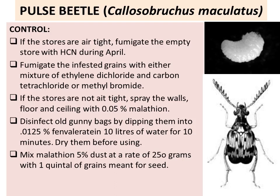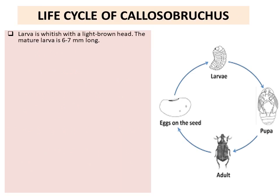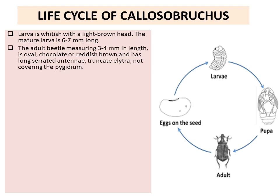Regarding the life cycle of Callosobruchus: adult males and females are separate. They mate and lay eggs on the surface of the seed. The eggs hatch to form the larva, which bores inside the seed. The larva is whitish with a light brown head. The mature larva is 6–7 mm long. The adult beetle is 3–4 mm in length, oval, chocolate or reddish brown, has two serrated antennae and truncate elytra not covering the pygidium.